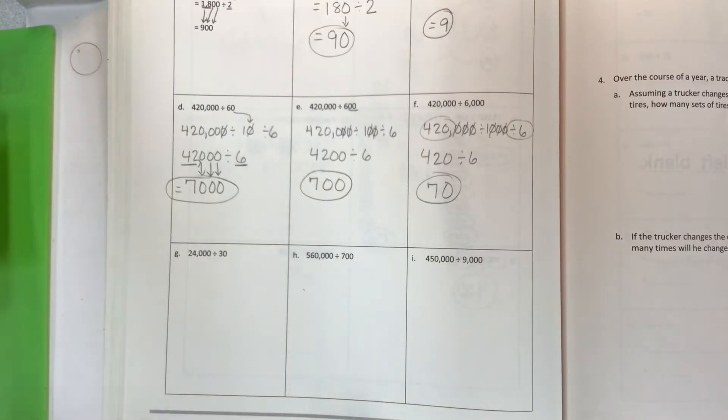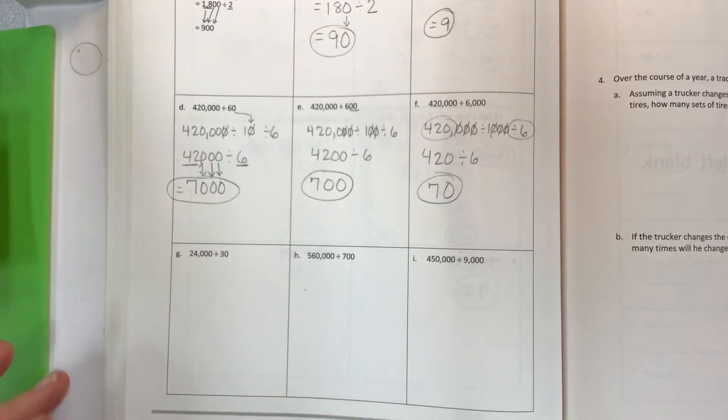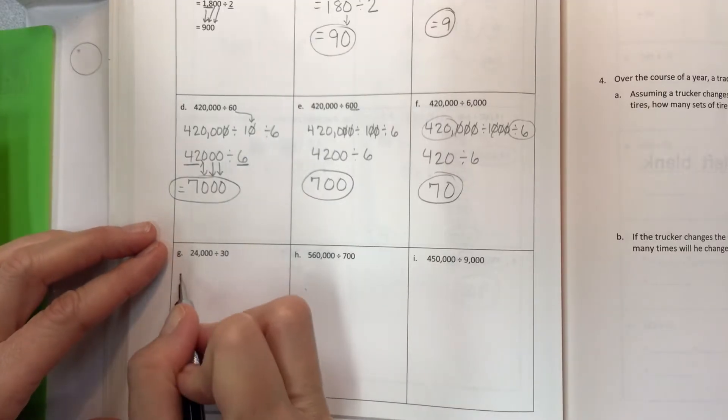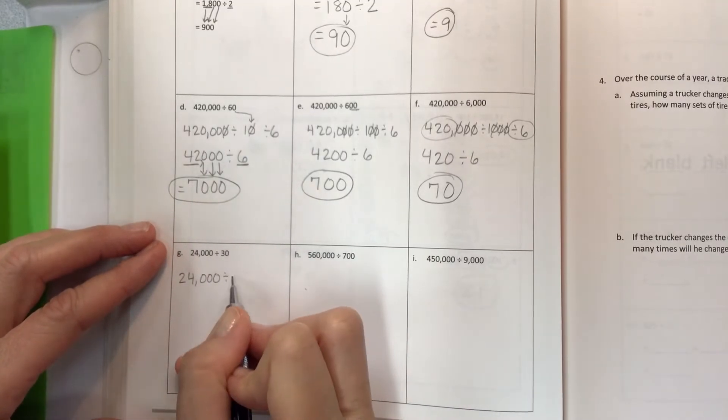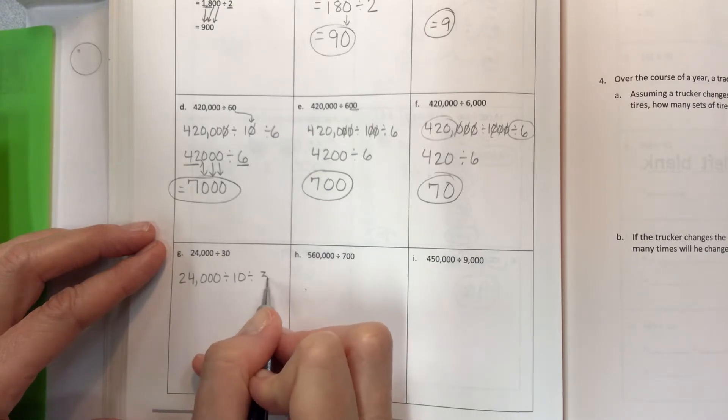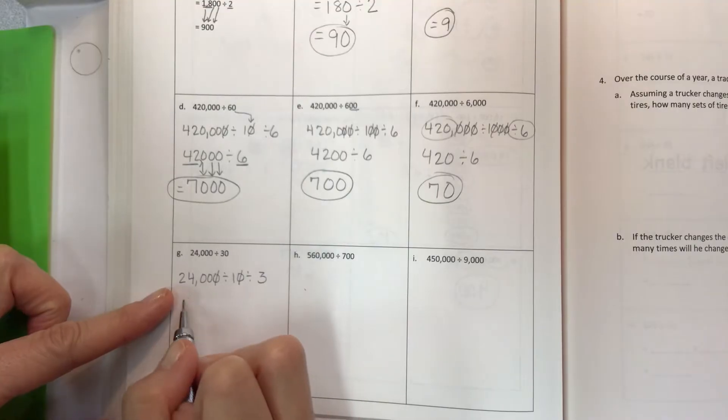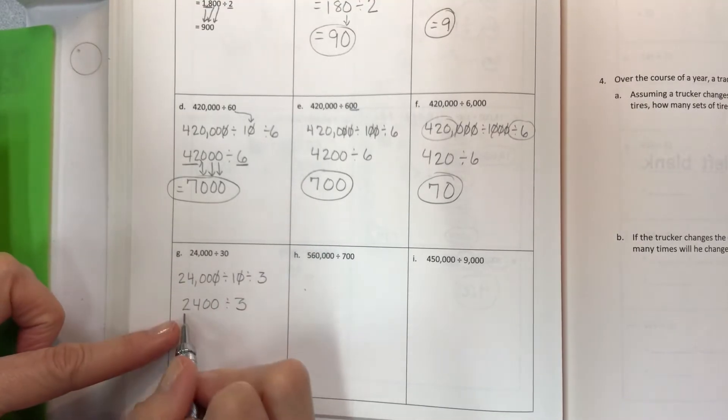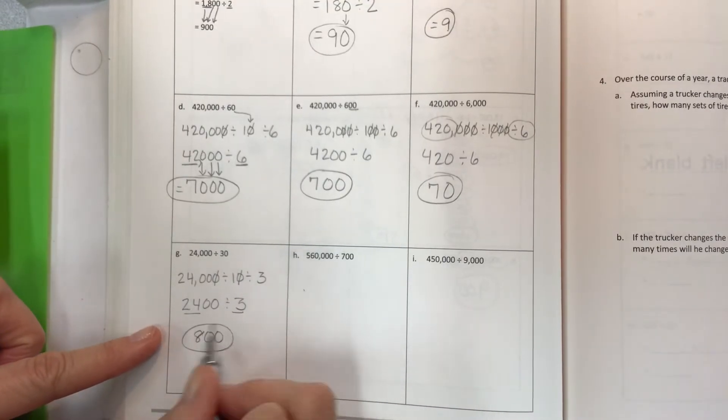On the last row, they throw in a few other quick facts, so really watch that 10 and see how many zeros you can remove. 24,000 divided by 30 would be first the 10, then the 3. Take off one zero, two here, two here. That leaves you with 24,000 divided by 3, which gives you 24 divided by 3 for 8, with the two zeros left over for 800.